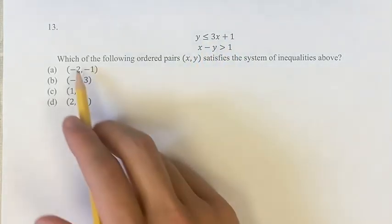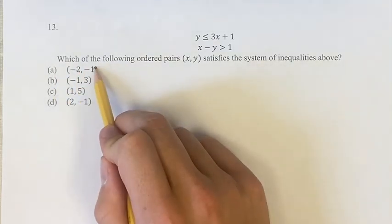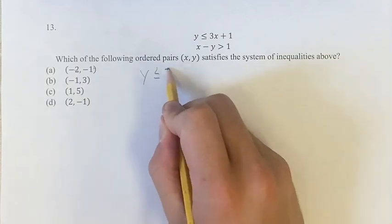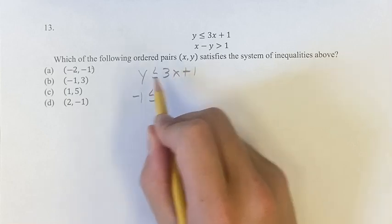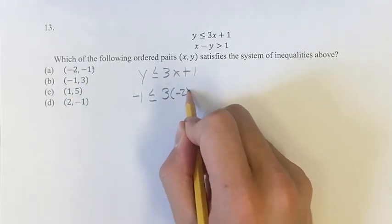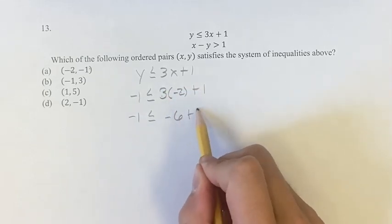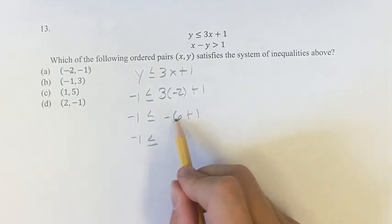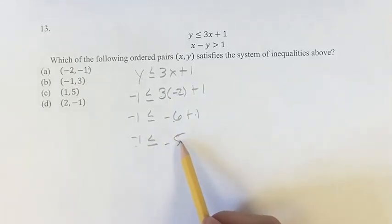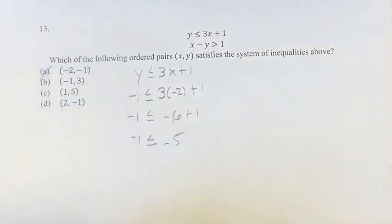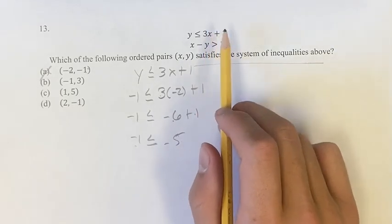Let's do point A, for example. We have x = -2, y = -1. So if we have y ≤ 3x + 1, then -1 ≤ 3(-2) + 1. That gives us -1 ≤ -6 + 1, which is -1 ≤ -5. Negative 1 is not less than or equal to -5, it's greater than -5. So A does not satisfy the system of inequalities because it fails the first inequality.